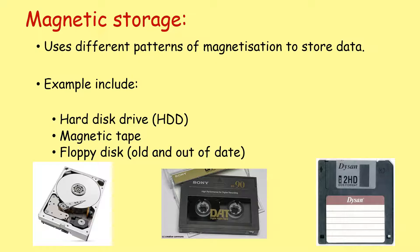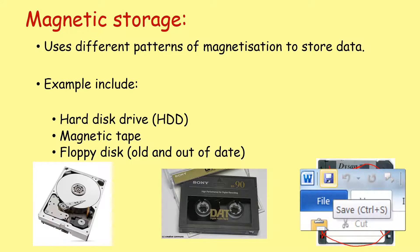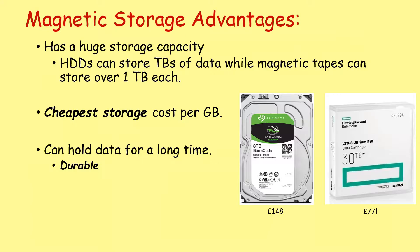The floppy disk is old and out of date now — we don't use it anymore, but it does bring back many fond memories. The only contact most people have with the old floppy disk is just the save icon in their Microsoft Office suite of applications. The advantages of magnetic storage are that it has a huge storage capacity. Hard disk drives can store terabytes of data, while magnetic tapes can store well over one terabyte each. It has the cheapest storage cost per gigabyte, and it can hold data safely for a long time.